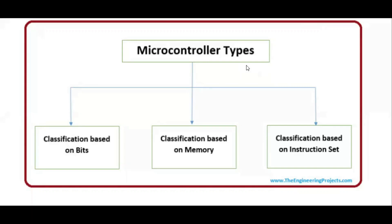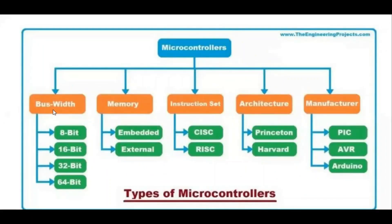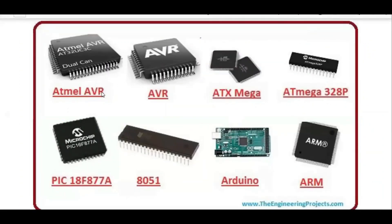Microcontrollers are classified by bus width: 8-bit, 16-bit, 32-bit, and 64-bit. They differ by memory type (embedded or external), instruction set (CISC or RISC), architecture (Princeton or Harvard), and manufacturer — including PIC, AVR, and Arduino using the Atmel platform.